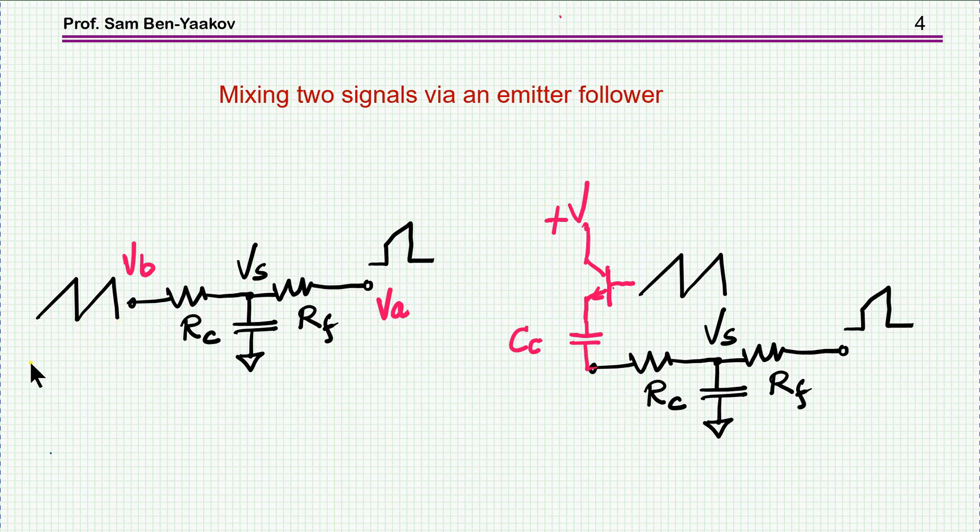And this is how TI in the datasheet is showing it, rather than going directly from the source, going through an emitter follower with this capacitor, and then mixing these two signals. So this is the circuit I'm talking about.